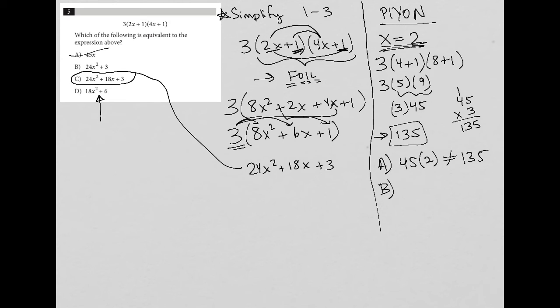Choice B would be 24 times two squared plus three. So this is 24 times four. And again, we don't have a calculator. So just be careful with this. But once you do the math on the side, you would see that this is not equal to 135.